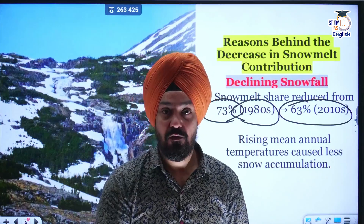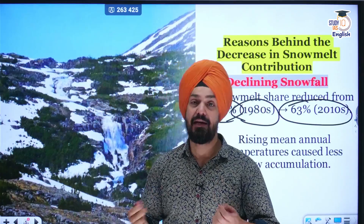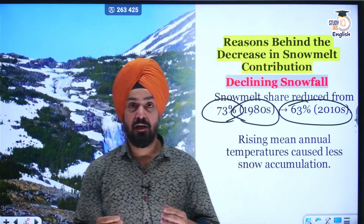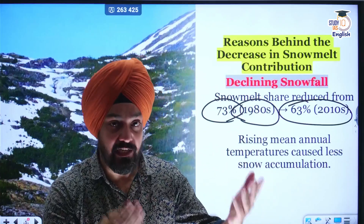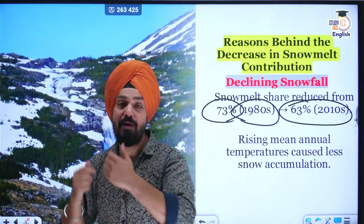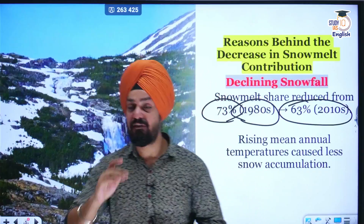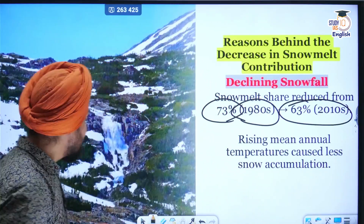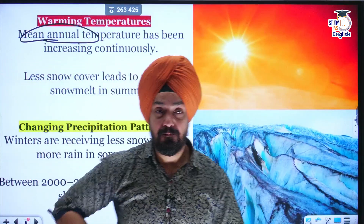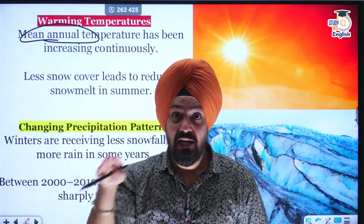Take the example of winters of 2023 and 2024. Due to El Niño, the Himalayan belt — especially the Western Himalayan belt, which includes Kashmir Himalayas, the Dhauladhar range, and Kumaon Himalayas — received less snowfall. Why? Because mean annual temperature is rising continuously, due to which there is less fresh snow cover in the Himalayan belt.